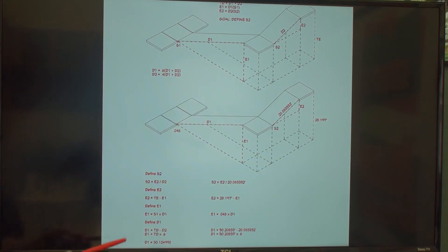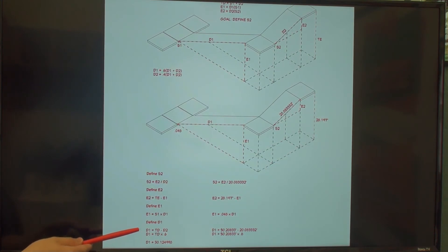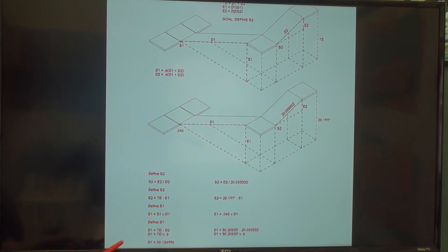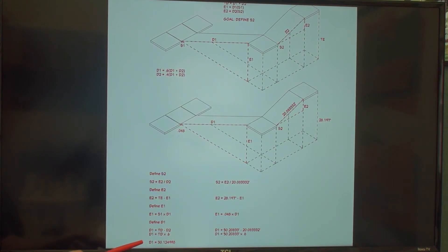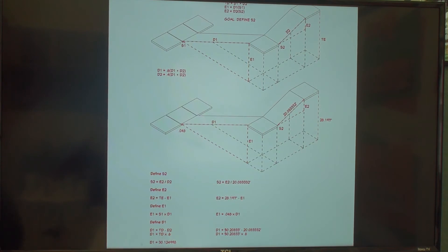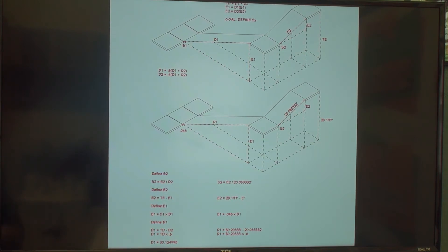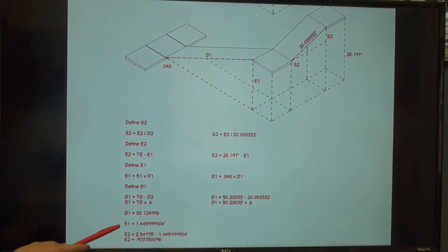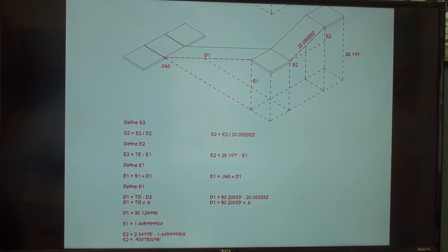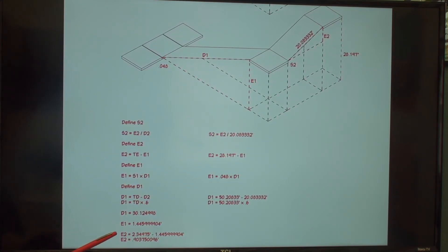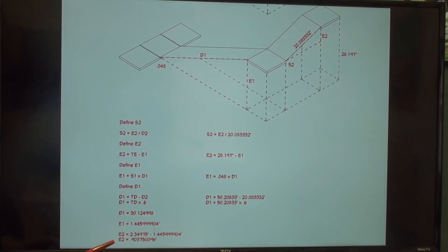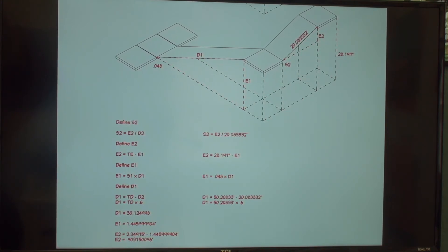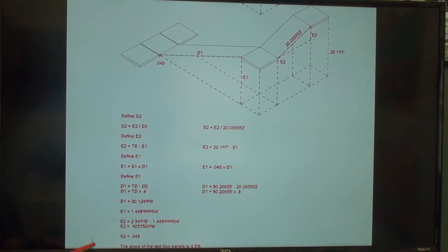This can be solved either of two ways. The first, by subtracting the length of the four panels by the total length of the new sidewalk, and the second, by multiplying the total length by 0.6. If we have done our math right, both of these methods should yield an answer of 30.124998 feet for the length of the first six panels. Now it is just a matter of working our way back to the original equation by plugging everything in. E1 equals 1.4459999904 feet. Here, I converted the total length into feet instead of inches so I could get 0.903750096 feet as the value for E2. And finally, we get 4.5% as the slope for our last four panels.